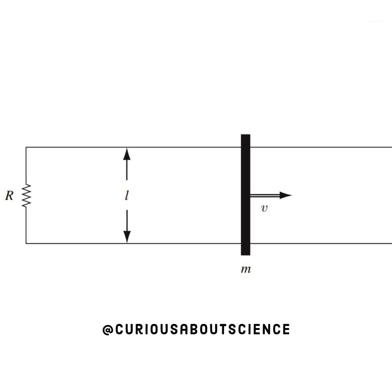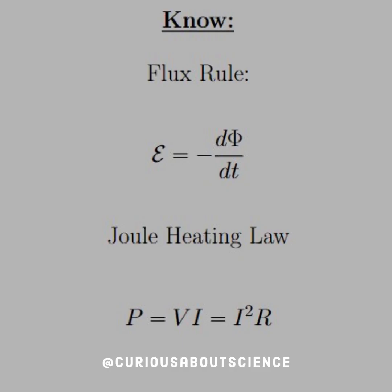So we have a bar of mass moving to the right with V, separated by a length of L, and we see that we have the resistor over there chilling. Alright, so what do we need to know?